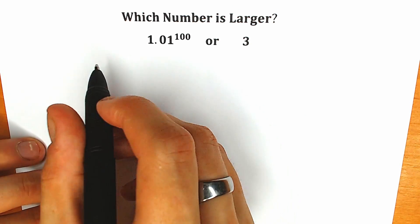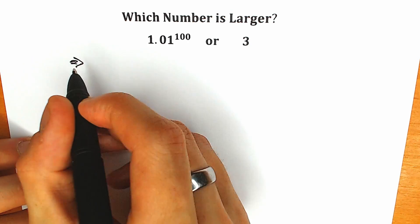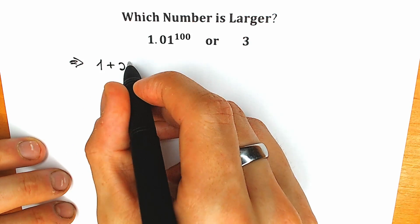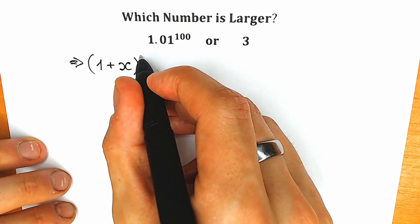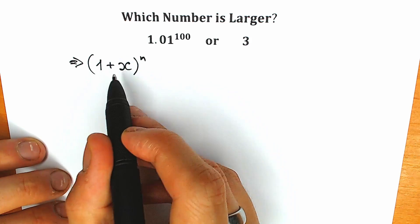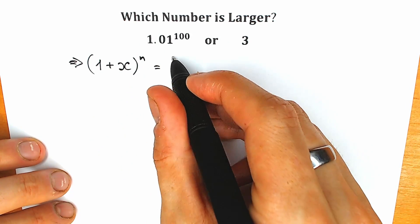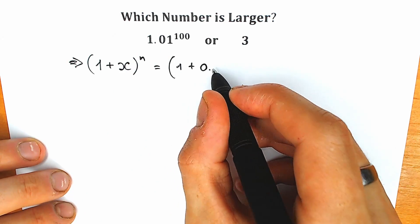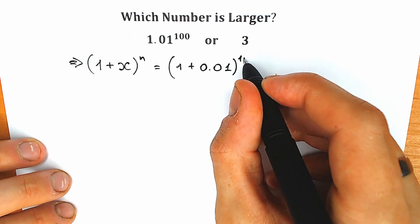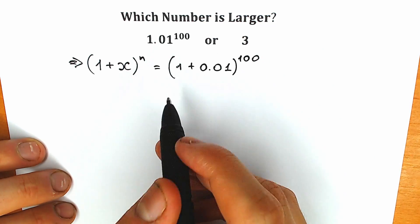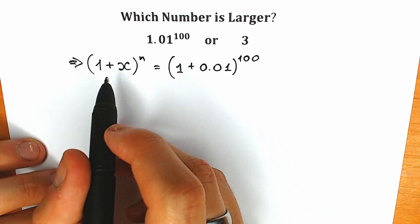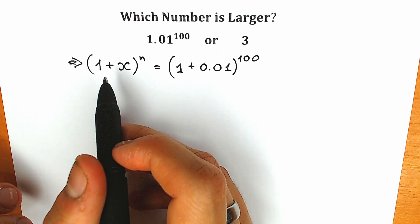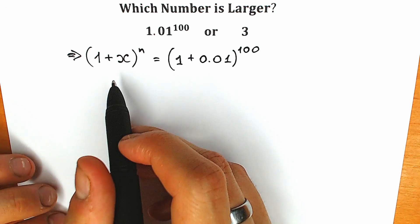How does the method work? First, let's write our expression on the left side according to the general form. We can write 1.01 to the power 100 as (1 + x) to the power n, where instead of x we write 0.01, giving us (1 + 0.01) raised to the power 100. This form is important because we need it to find the binomial expansion — to expand this expression.